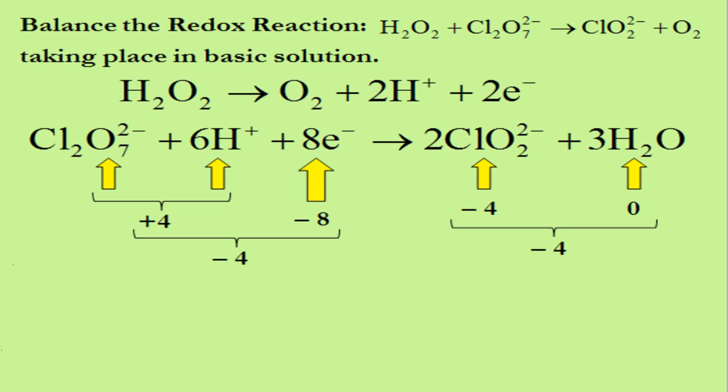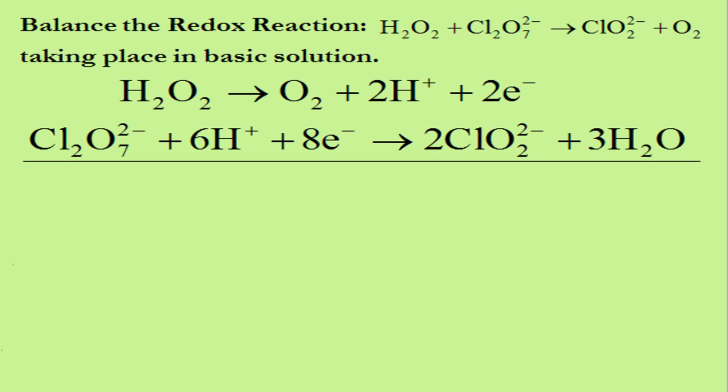Our next step is to write the balanced equation for the overall redox reaction. We start by drawing a line under these half-reactions. The top half-reaction has two electrons on the right side and the bottom one has eight electrons on the left side. To equalize electrons lost and gained, we put brackets around the top reaction and multiply the whole thing by four, so that we have four times two, or eight electrons on the right side to match those on the left side of the bottom reaction.